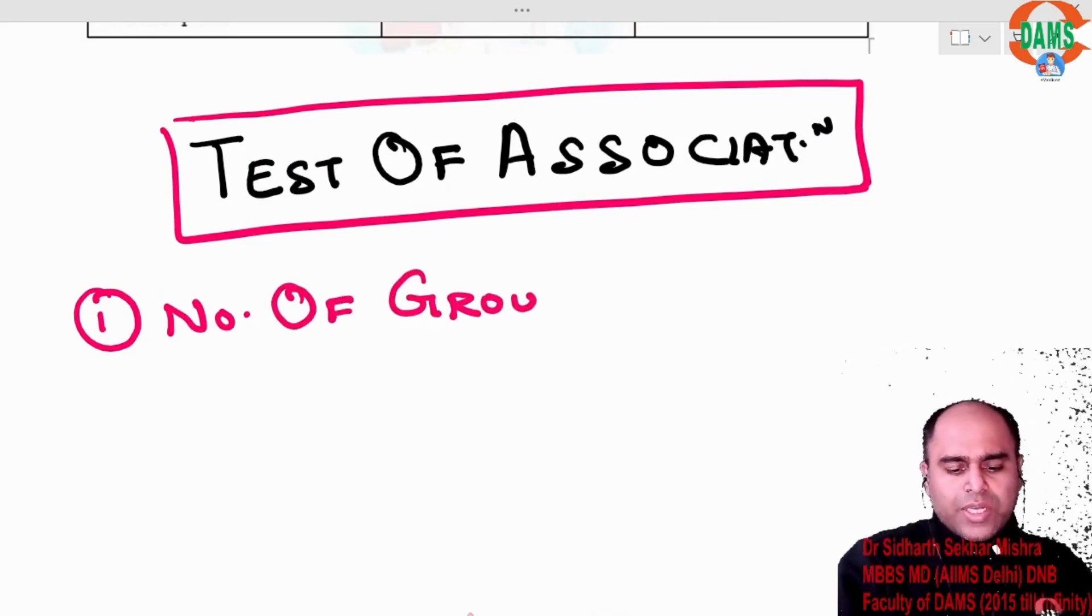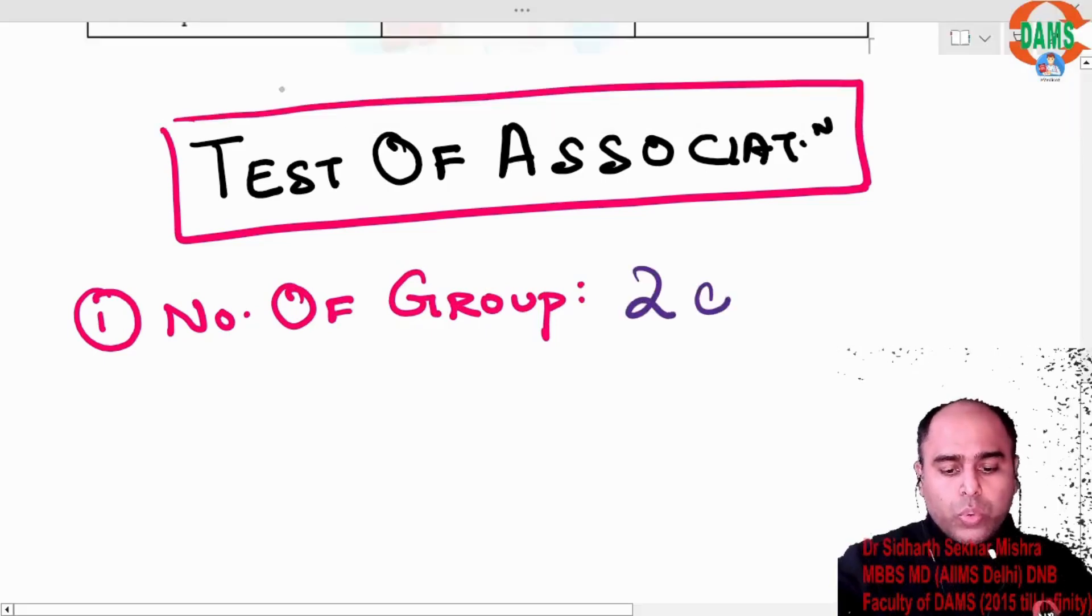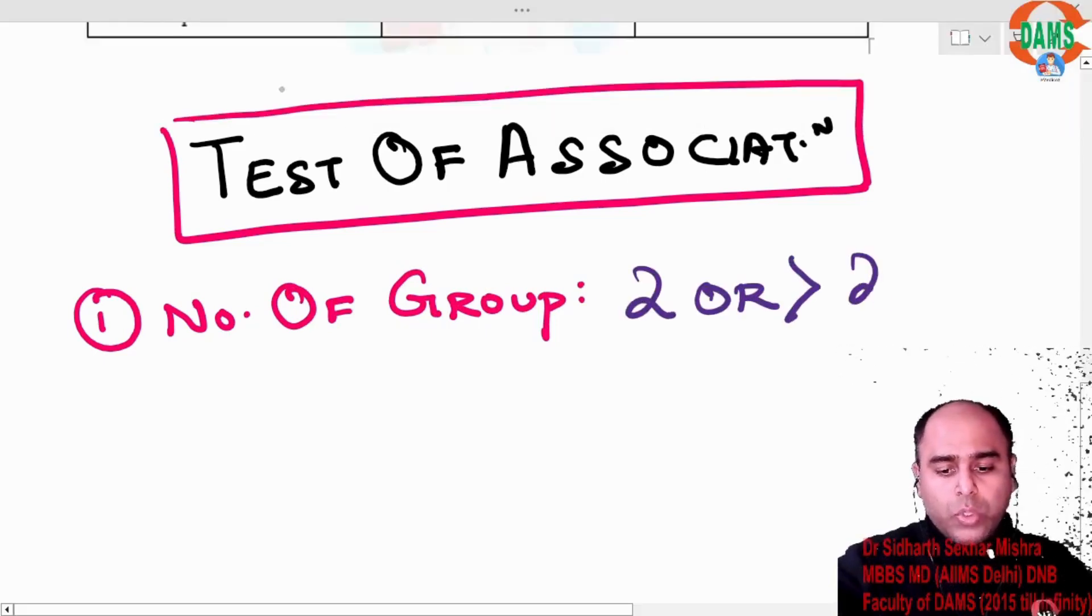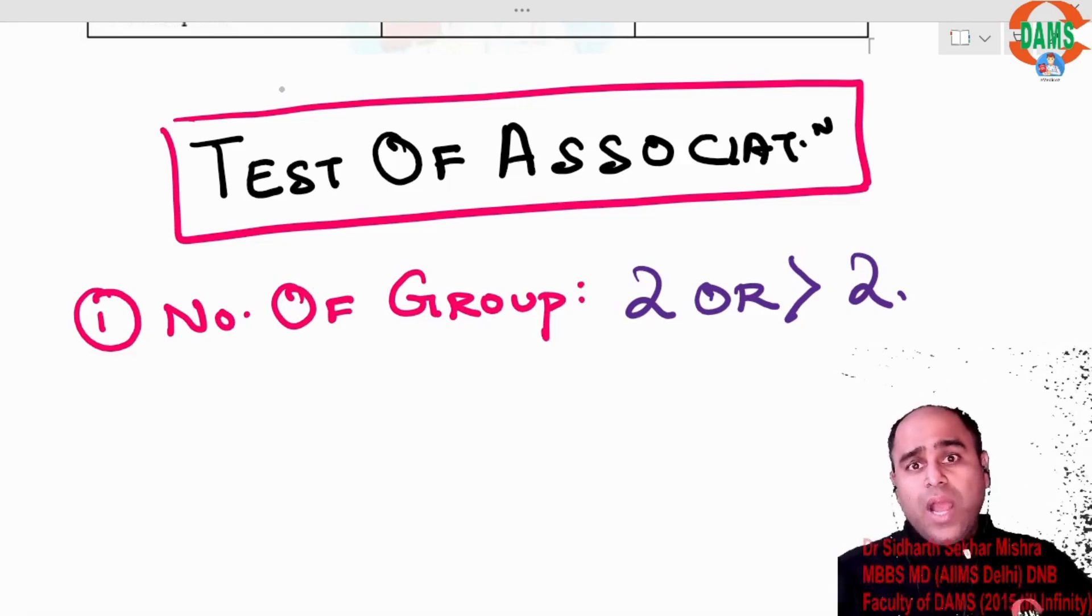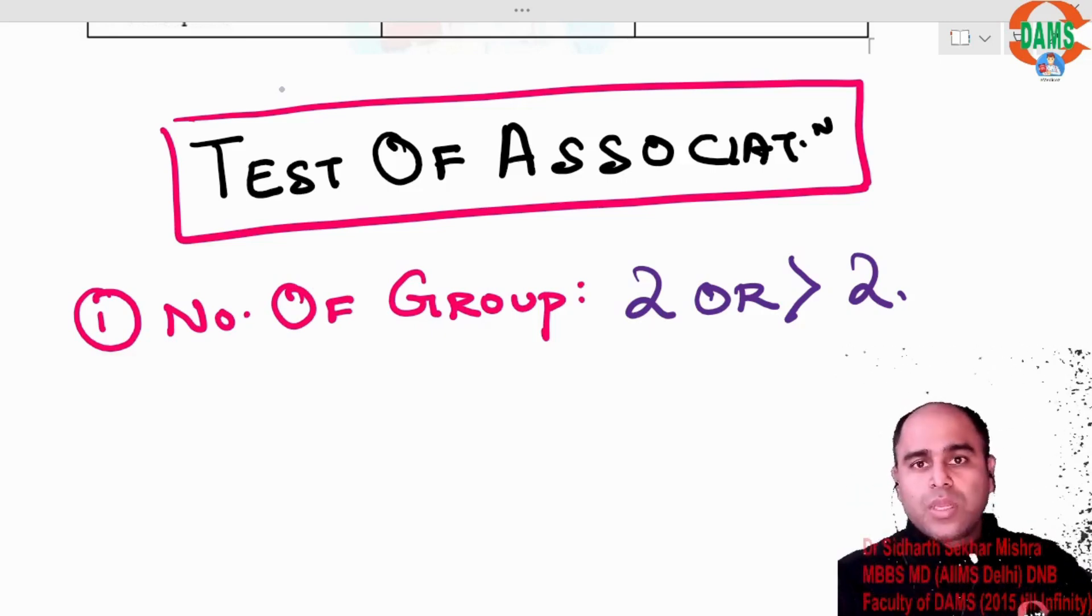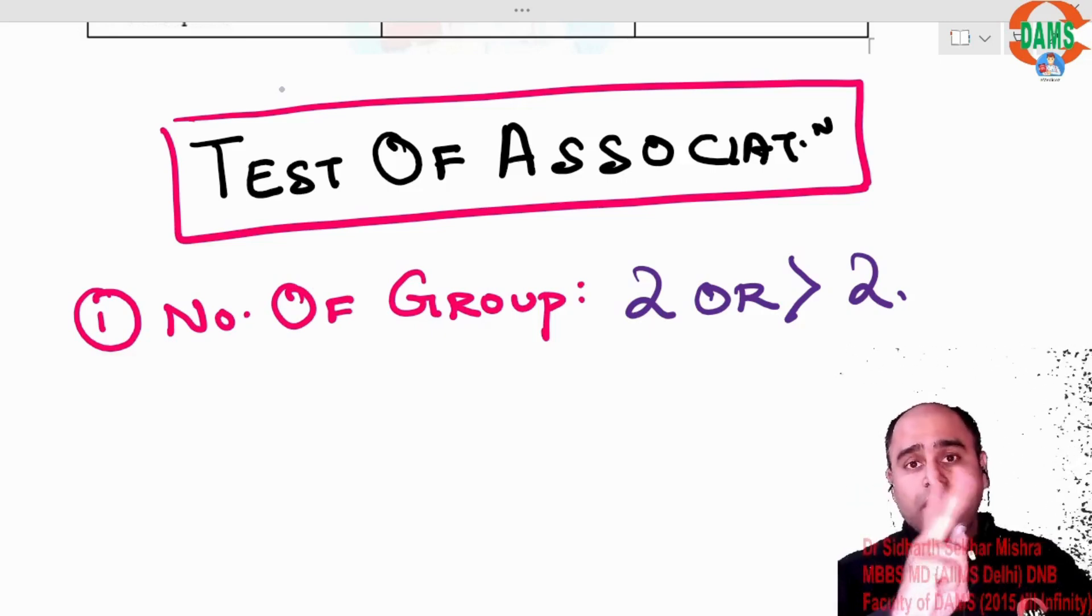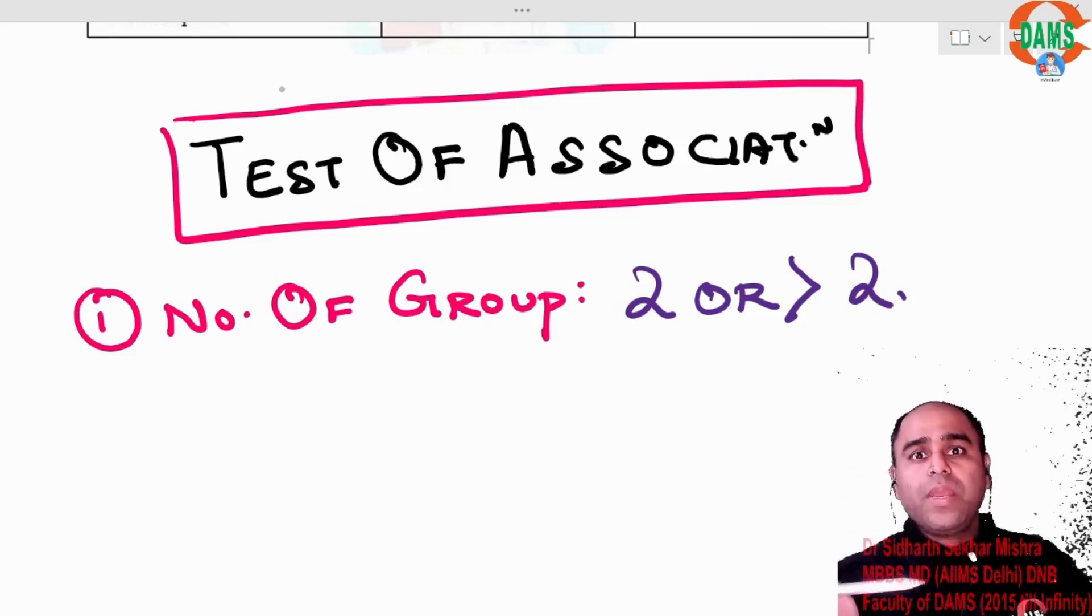You have to read the question and determine whether the number of groups is 2 or more than 2. Like suppose I want to do a study where I want to take Maulana Azad and Lady Hardinge, there are only 2 colleges, so there are 2 groups. But if I have to take Maulana Azad, Lady Hardinge, Sabdarjan and AIIMS, more than 2 groups.